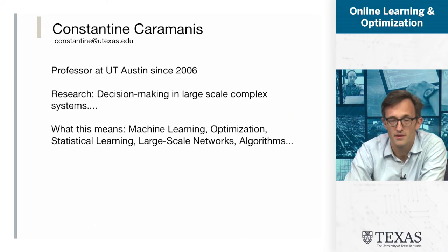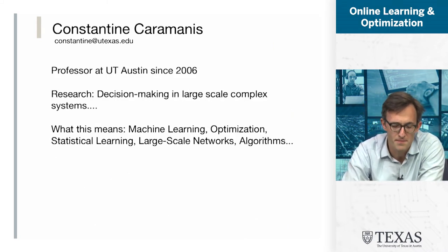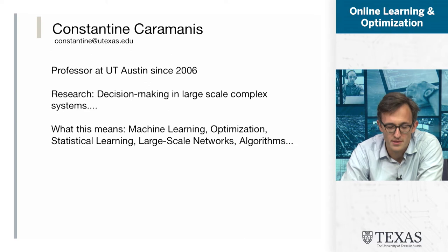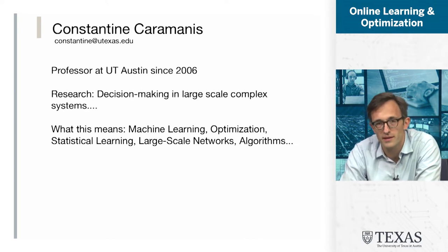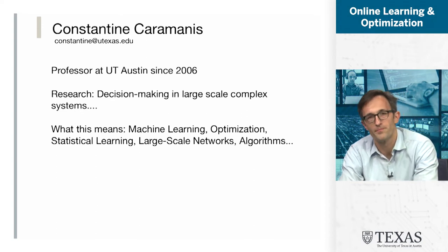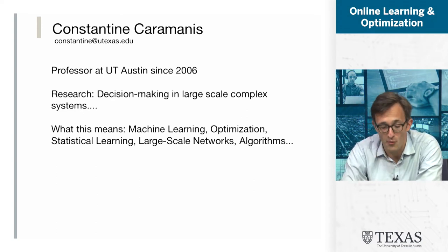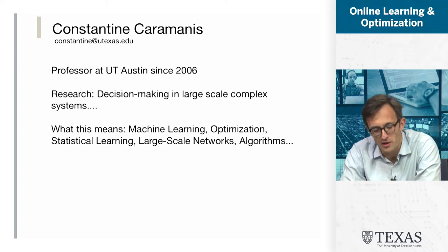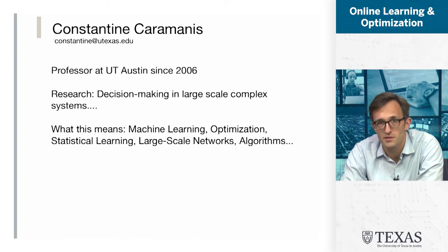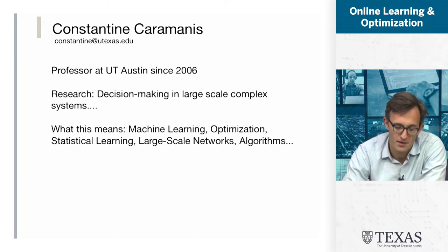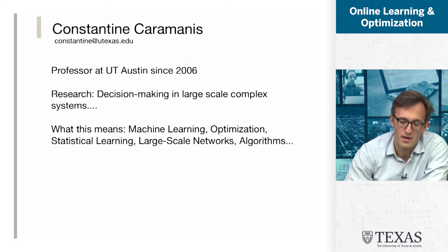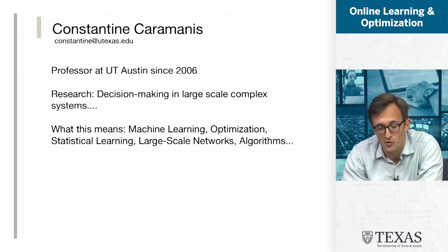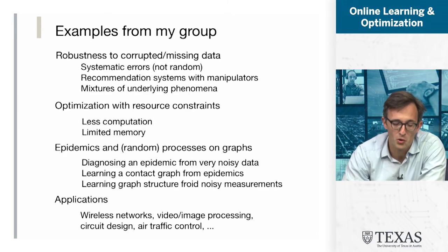Let me tell you a little bit about myself. I've been a professor at UT Austin in the electrical and computer engineering department since 2006. My research focuses on decision-making in large-scale complex systems — for the most part, machine learning, optimization, and statistical learning, involving large-scale networks, with algorithms underlying everything. To give you more flavor, I'll share some things I've worked on with PhD students in my group over the last several years.